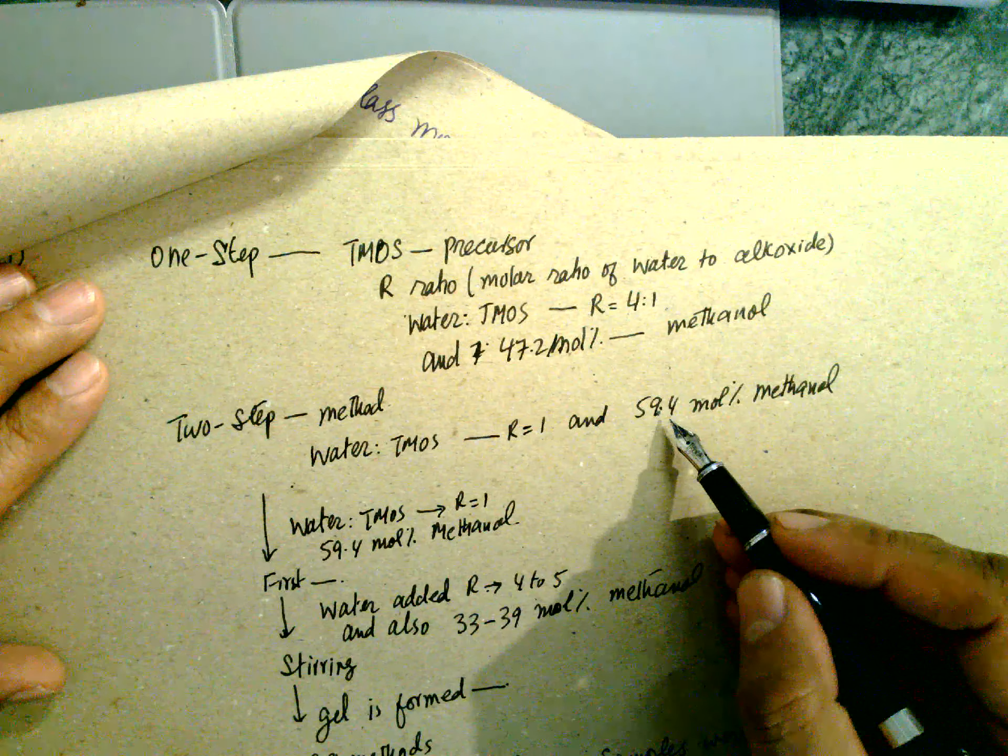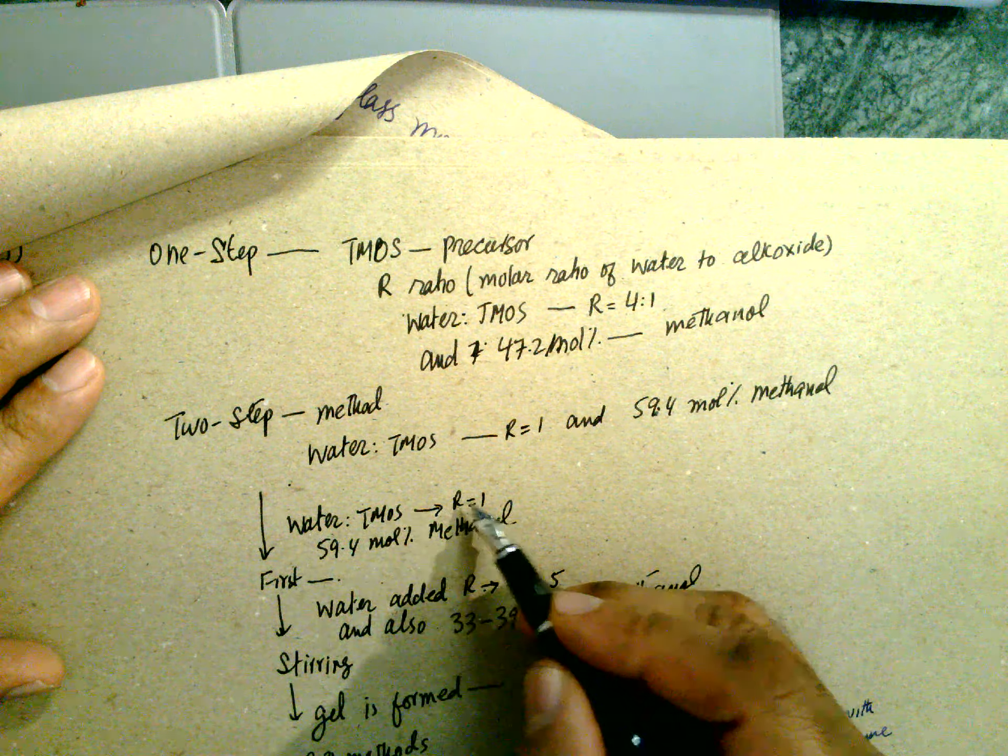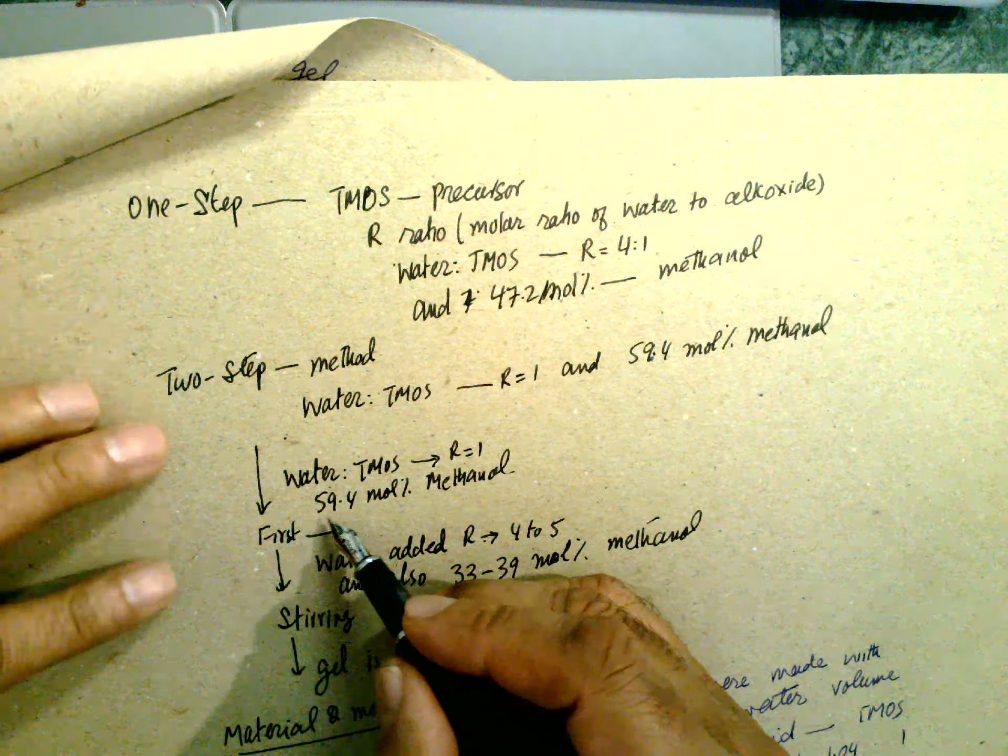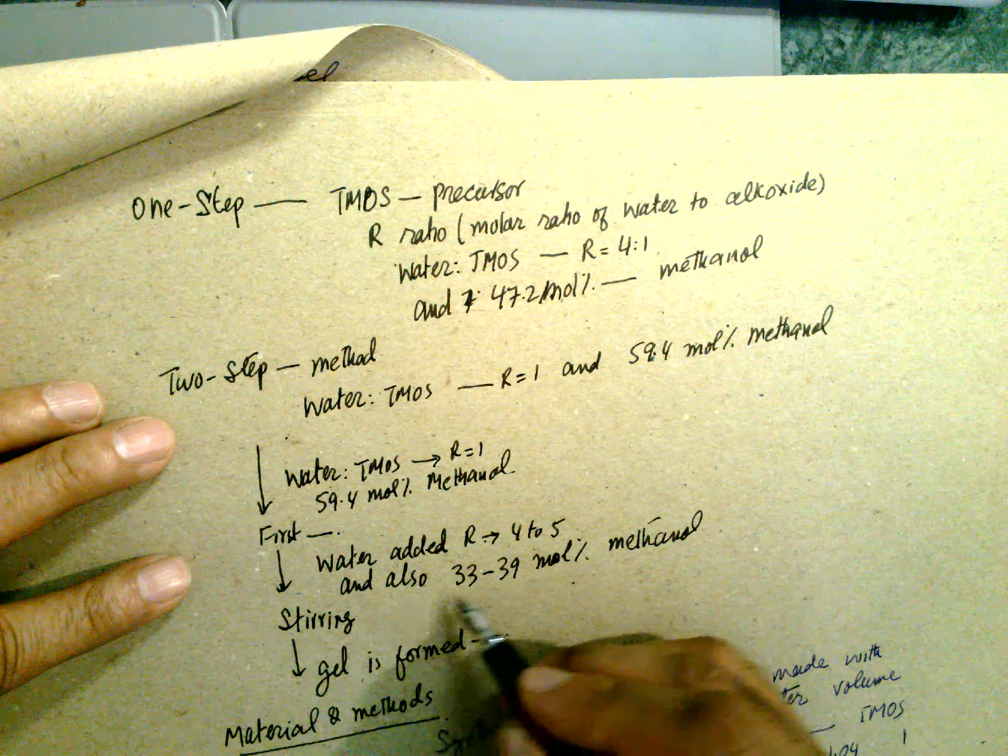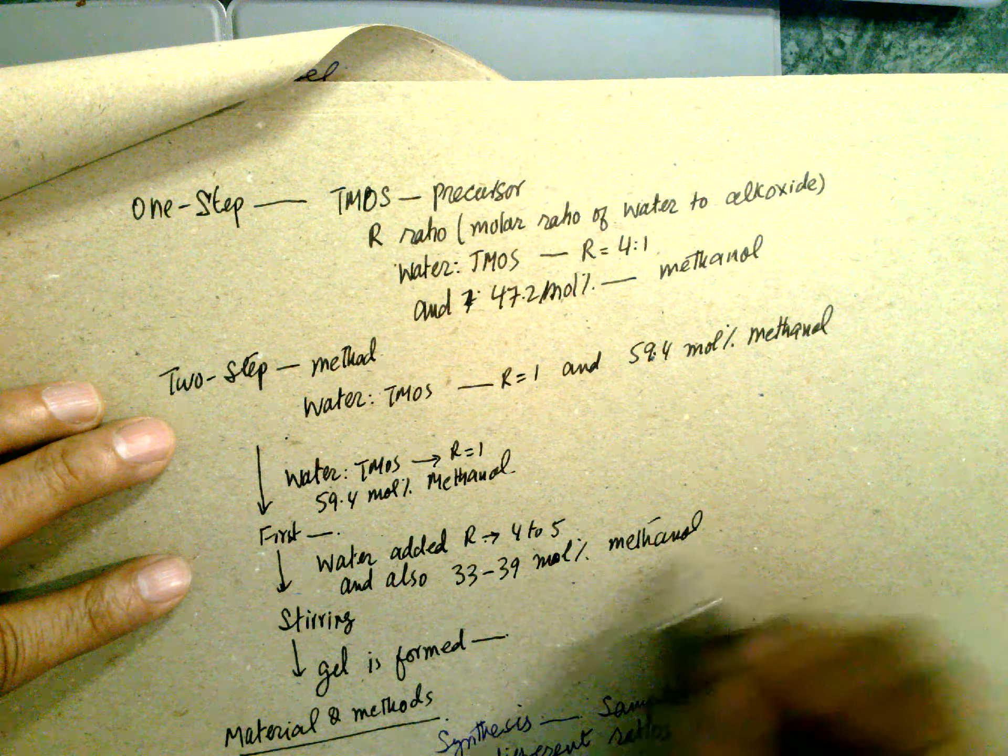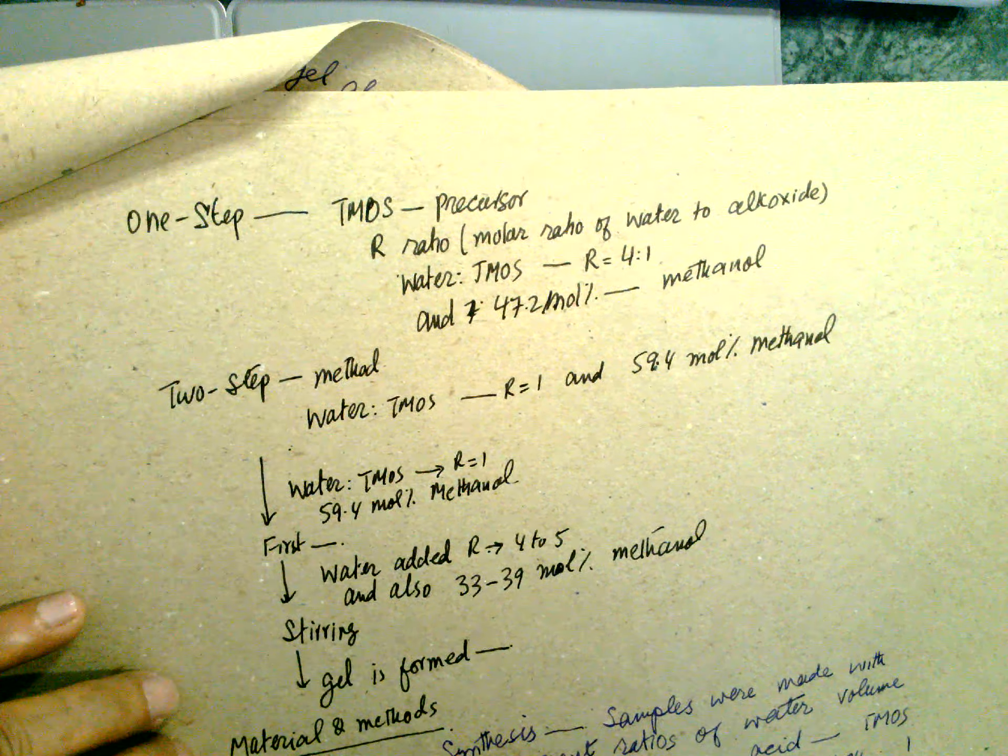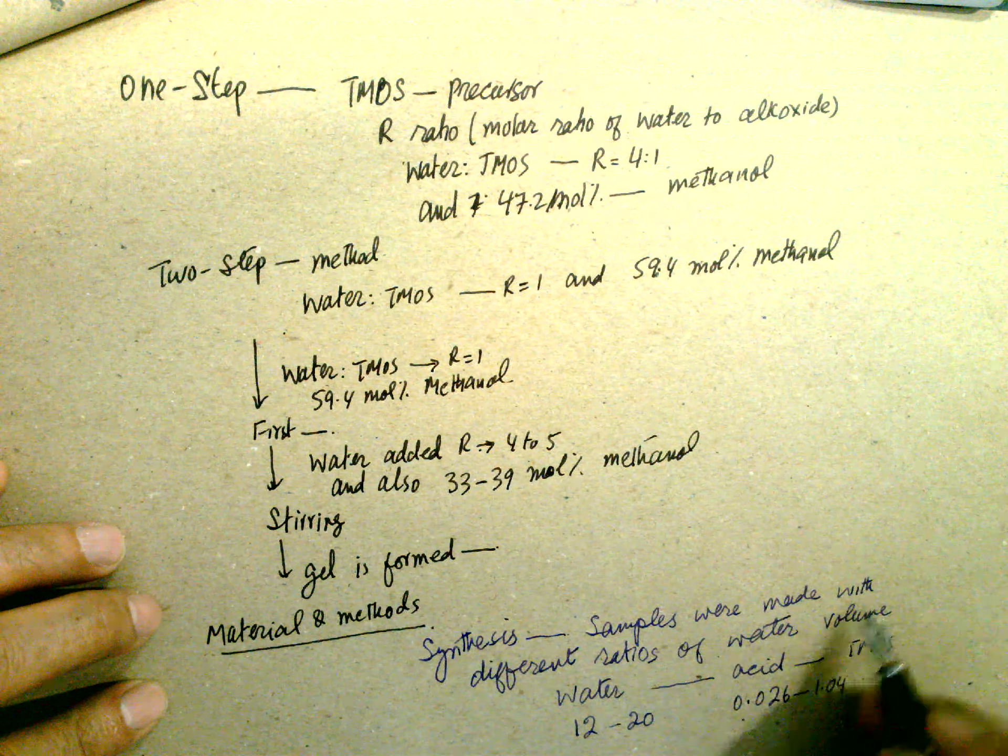Two-step method: water to TMOS is 1, so 59.4 mole percent methanol. Water to TMOS is 1. First of all, water is added, and R is 4 to 5, and then also 33 to 39 percent of methanol, and stirred.